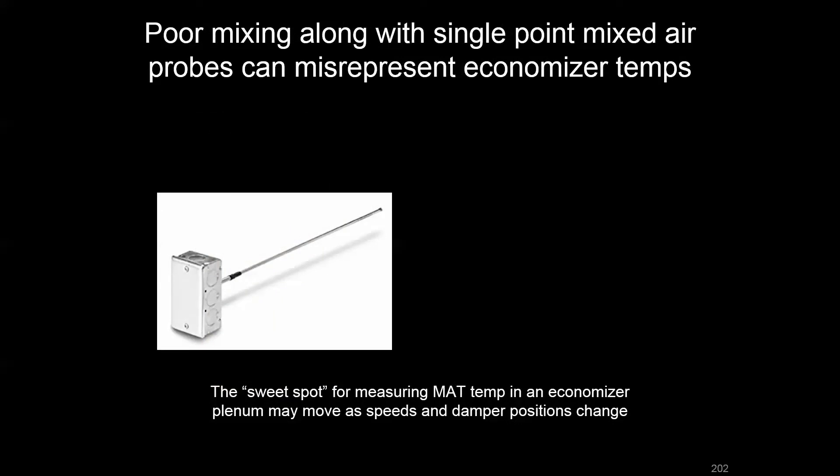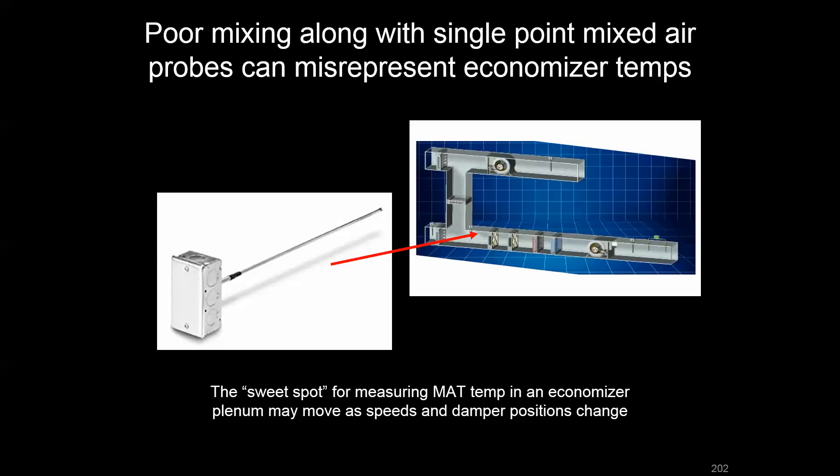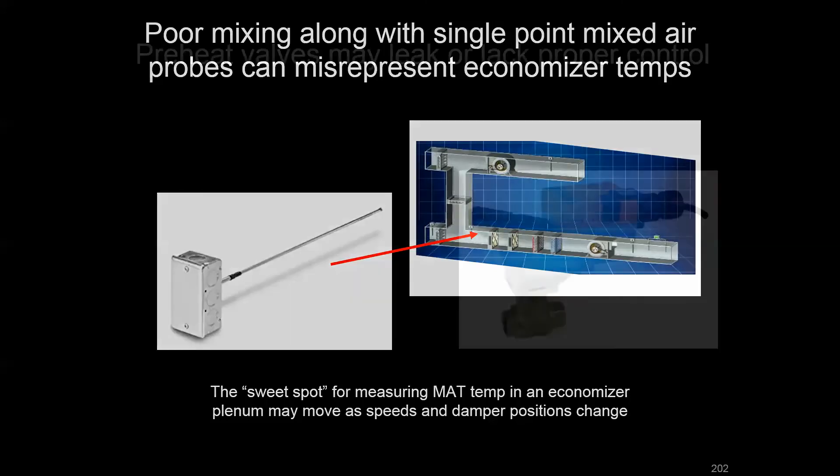Using a point or probe sensor instead of an averaging sensor creates additional problems. You lose the ability to see average mixed air temperature, and even if you find a sweet spot in the plenum, that sweet spot may shift at different damper positions and fan speeds.